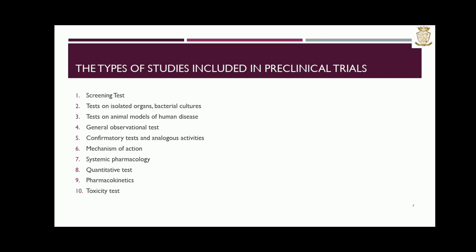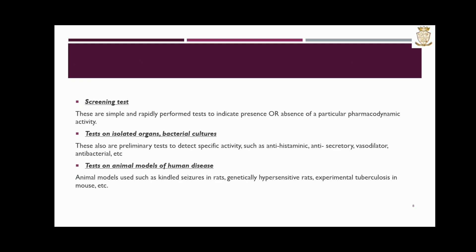The types of studies included in preclinical trials: First is the screening test — these are simple and rapidly performed tests to indicate presence or absence of particular pharmacodynamic activity. Tests on isolated organs and bacterial cultures are also preliminary tests to indicate specific activity such as antihistaminic, antisecretory, antibacterial, etc. Tests on animal models of human disease use animal models such as kindled seizures in rats, genetically hypertensive rats, and experimental tuberculosis in mouse, etc.